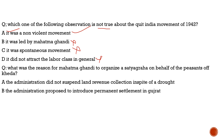The final question asks: what was the reason for Mahatma Gandhi to organize a Satyagraha on behalf of the peasants of Kheda? Option A: The administration did not suspend land revenue collection in spite of drought — 100% correct. There was a severe drought but instead of suspending collection, they demanded an extra 23%. Option B: The administration proposed to introduce permanent settlement in Kheda — totally incorrect. So the correct answer is option A only. Please like the video, share it with your friends, and subscribe to the channel. Thank you for staying with me, have a nice day.